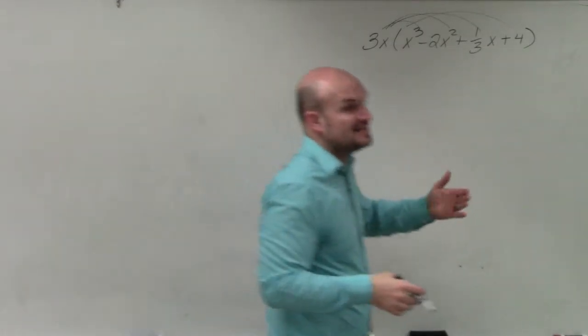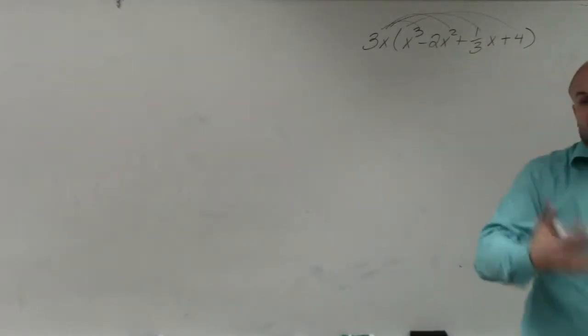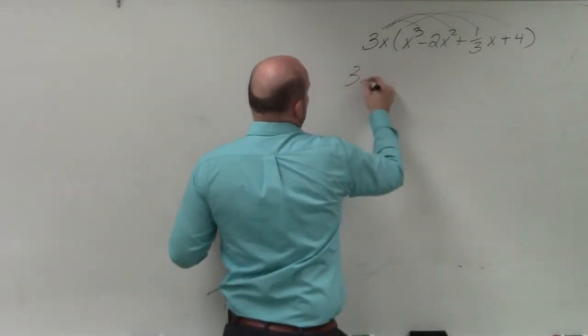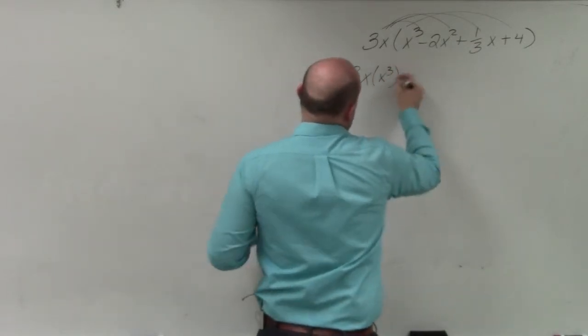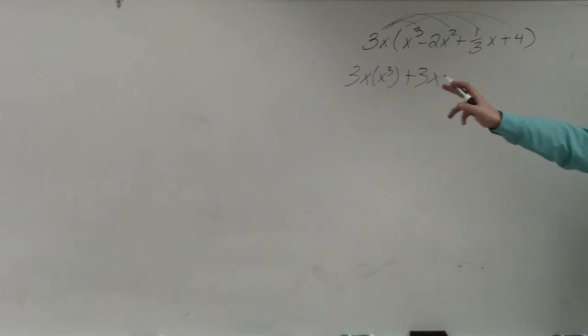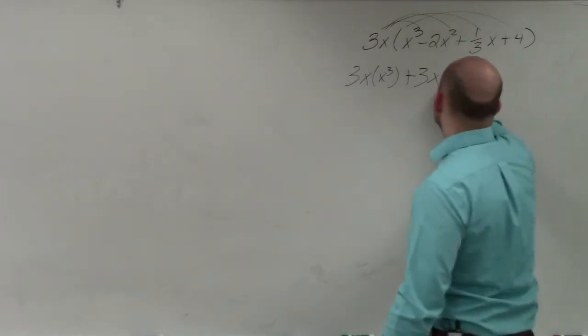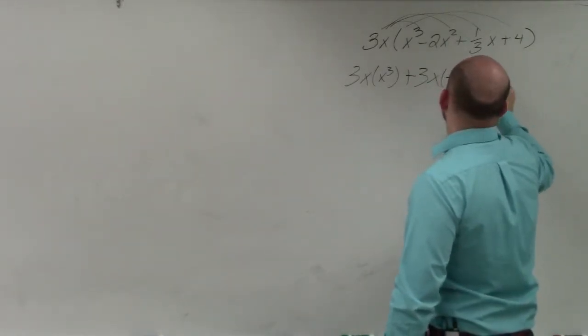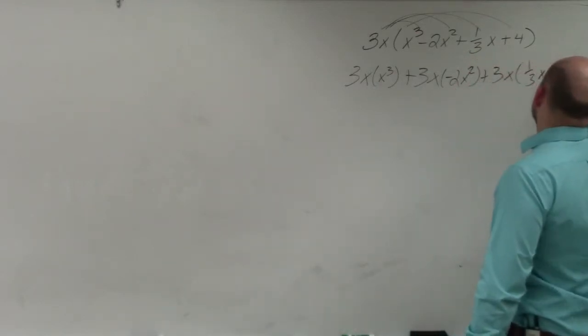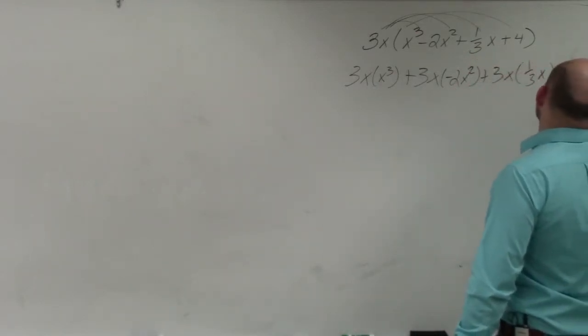Now, you guys can see all these lines. It starts to get a little bit crazy, right? It's like a lot of distributive property. But the main important thing I want you guys to understand is, this basically means 3x times x cubed plus 3x. I'm writing plus because that 3x is positive. Okay. 3x times negative 2x squared plus 3x times 1 third x plus 3x times 4.